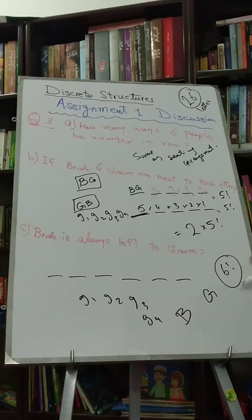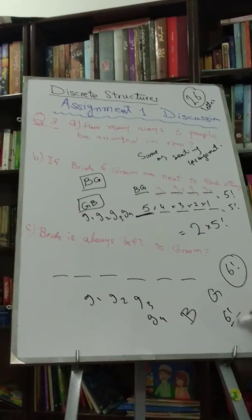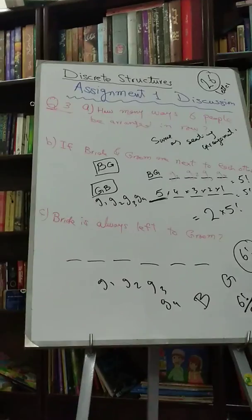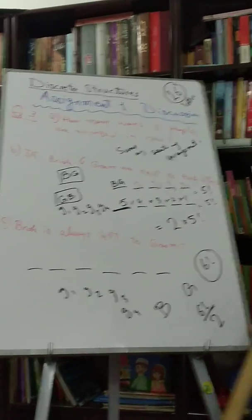So answer is easy. It's going to be total arrangements, which is six factorial, divided by two, because half of the time it's going to be on the right, half of the time it's going to be on the left. So this is all with question three. So pause.